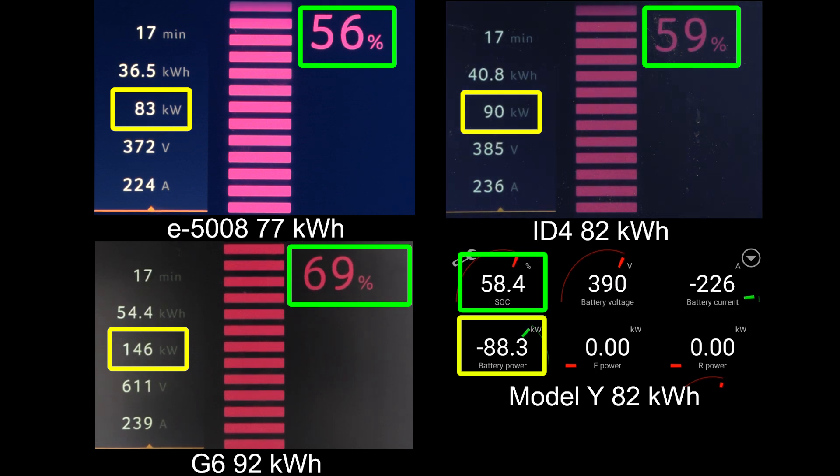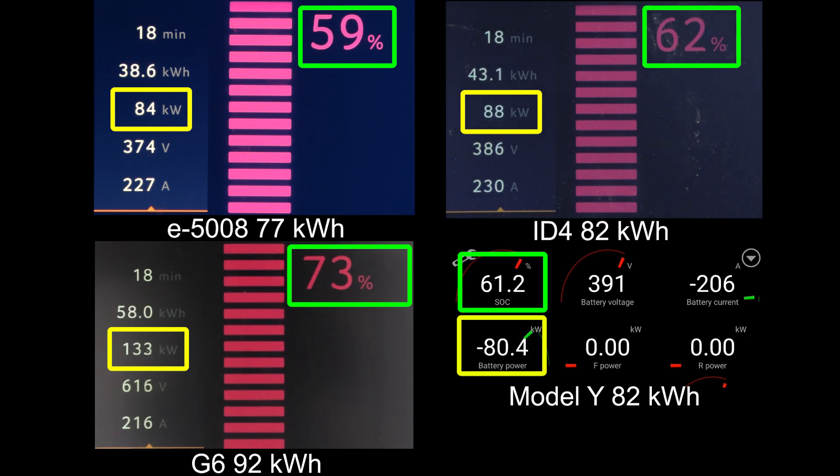Still maintaining okay speed-ish, not dropping to 75 kilowatt like many of the Stellantis cars would do, but they have a smaller battery. All right, what else is going on? Now it starts throttling a little bit more, but also the other cars can maintain okay speed. Like ID4 starts dropping a bit. Model Y drops actually also a bit, but then the G6.